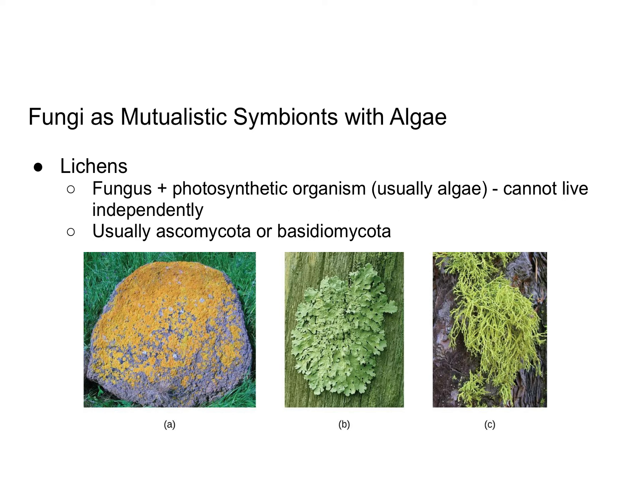Lichens are another example of fungi having a mutualistic relationship with another organism. In this case, the fungus is mutualistic with a photosynthetic organism, which is usually algae — remember that algae are classified as protists. You've probably seen lichens if you've been out hiking; you often see them on rocks, as shown in this picture. This is another example of a relationship where the fungi and the algae are not able to live independently of each other. The fungi involved are usually from the phyla Ascomycota or Basidiomycota.